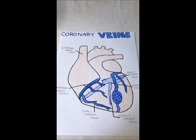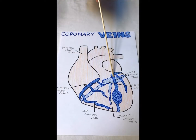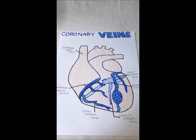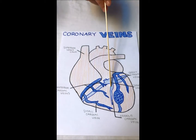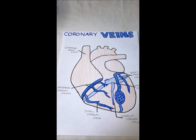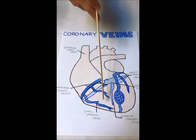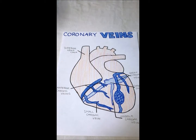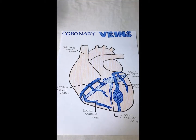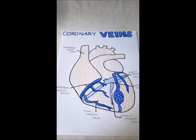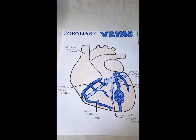Next up are the coronary veins. The cardiac veins collect blood from the heart. The great cardiac vein collects blood from the anterior ventricular septum. The middle cardiac vein gets blood from the posterior interventricular septum. The small cardiac vein gets blood from the right inferior margin, and the anterior cardiac vein gets blood from the right ventricle. Finally, the coronary sinus brings blood back to the right atrium.